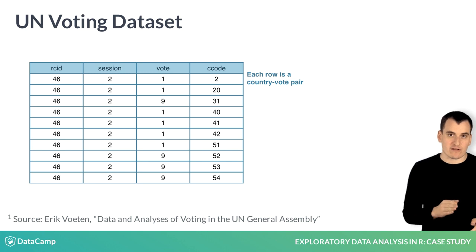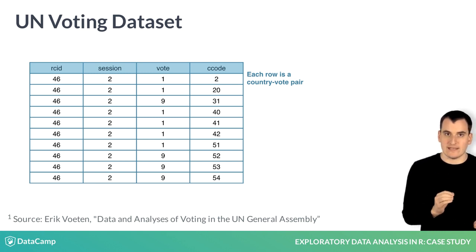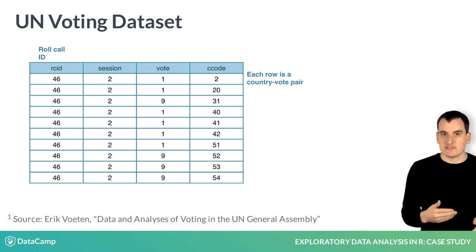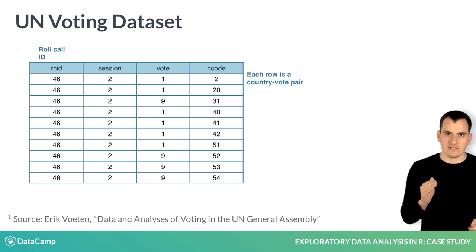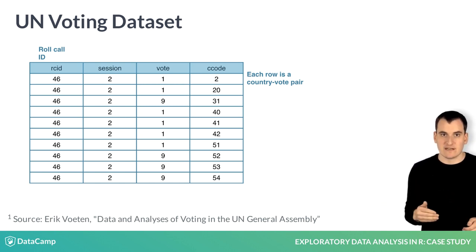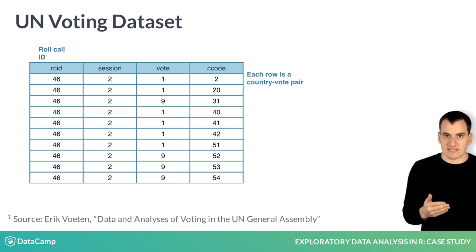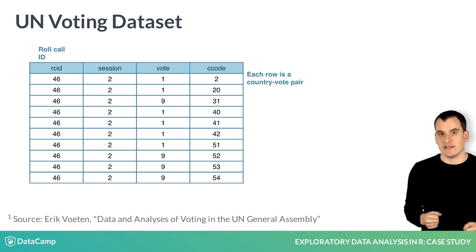The first variable, RCID, is the roll call ID, describing one round of voting, such as to approve a United Nations resolution. The session variable represents which year-long session in the UN's history the vote was cast. Note that to keep the data set at a reasonable size, only sessions from alternating years are included.